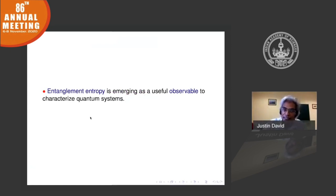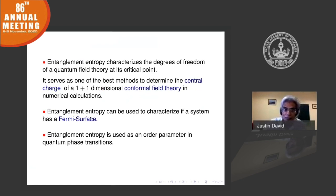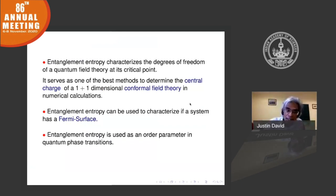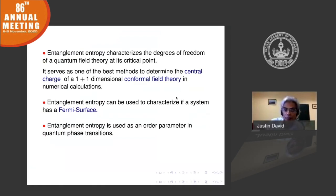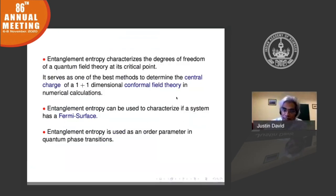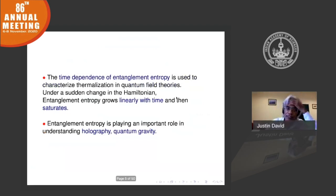It characterizes the degrees of freedom of a quantum field theory at a critical point. It serves as one of the best methods to determine something called the central charge of a conformal field theory in numerical calculations. It can be used to characterize if the system has a Fermi surface, and as an order parameter for certain quantum phase transitions — phase transitions at zero temperature. The time dependence of entanglement entropy can also be used to characterize thermalization in quantum field theories.